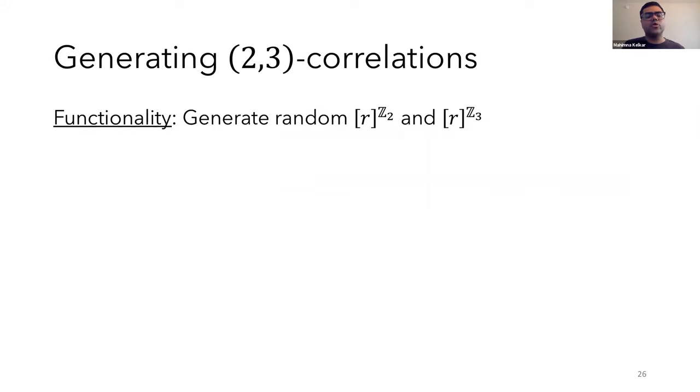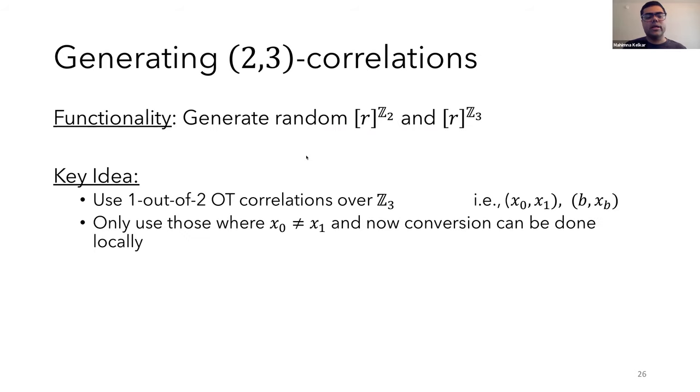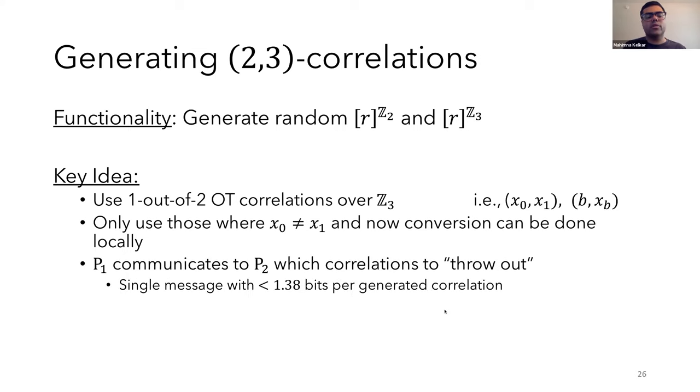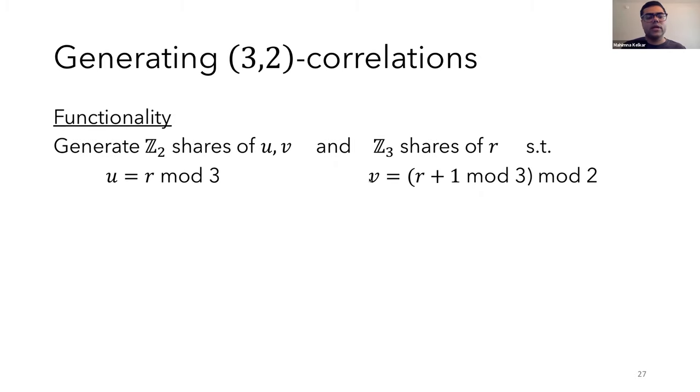So now I'll talk briefly about how we generate our specific correlations. So the functionality for the 2-3 correlation is to generate shares for the same bit over Z2 and Z3. And for this, we'll use 1 out of 2 OT correlations over Z3. So here, party 1 is given X0 and X1, and party 2 is given a bit B and the corresponding XB. Now, when X0 and X1 are different, the conversion between the OT correlation and the 2-3 correlation can be done locally. So all that remains is for party 1 to communicate to party 2 which correlations it needs to throw out. And this on expectation takes 1.3 bits of communication per instance.